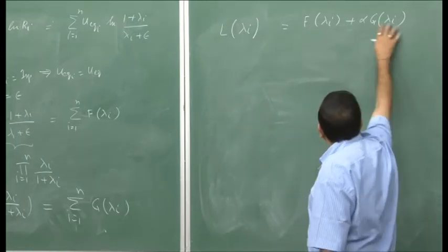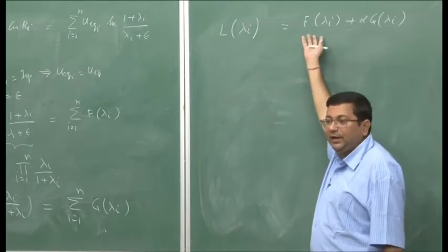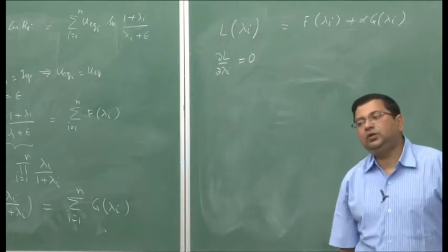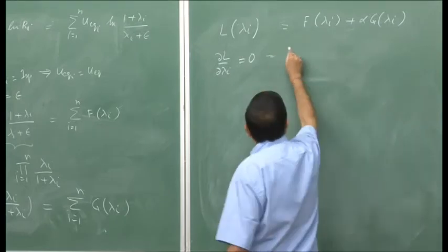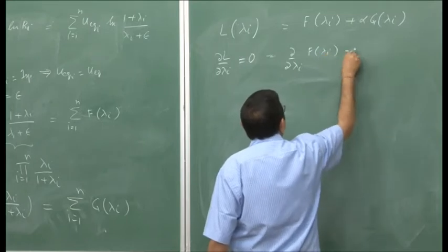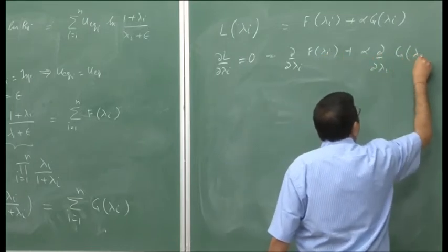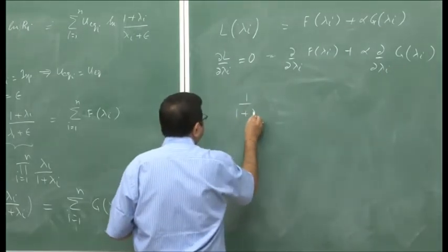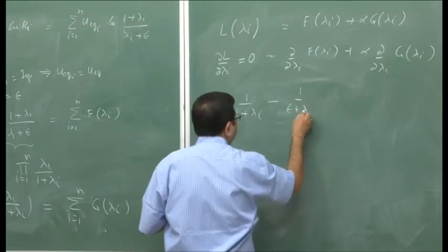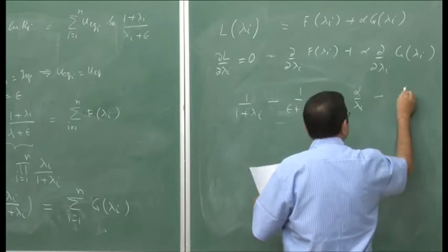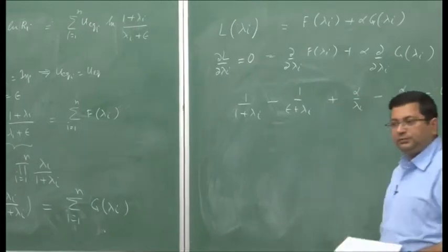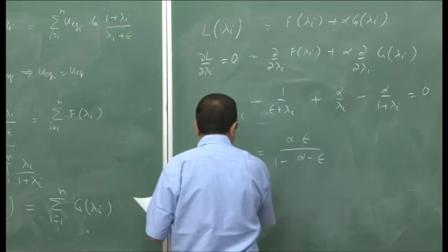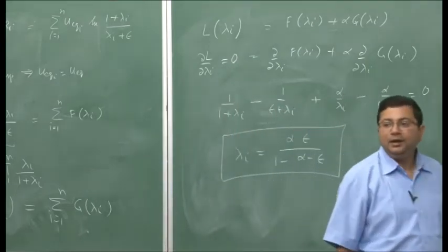This becomes our new objective function, which we maximize by setting dL/d(lambda_i) = 0. That implies d/d(lambda_i) of f(lambda_i) plus alpha times d/d(lambda_i) of g(lambda_i) equals zero. After differentiating and simplifying, we get an expression for lambda_i. This is what we obtained by the end of the last lecture.